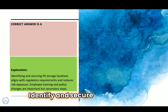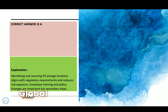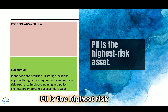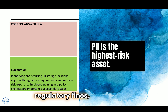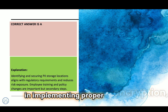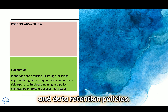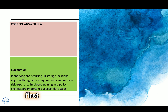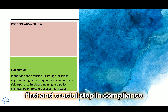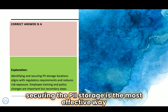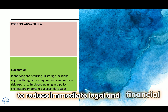The correct answer is Option A: identify and secure all PII storage locations. Global data protection regulations focus heavily on protecting personally identifiable information. PII is the highest-risk asset because its exposure can lead to regulatory fines, lawsuits, and reputational damage. Identifying where PII is stored enables proper encryption, access control, and data retention policies to be implemented. Many global regulations mandate data protection and breach notification, so securing PII storage is the first and most crucial step in compliance efforts and the most effective way to reduce immediate legal and financial risks.